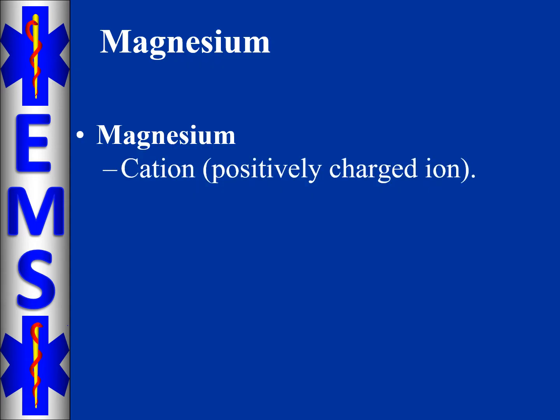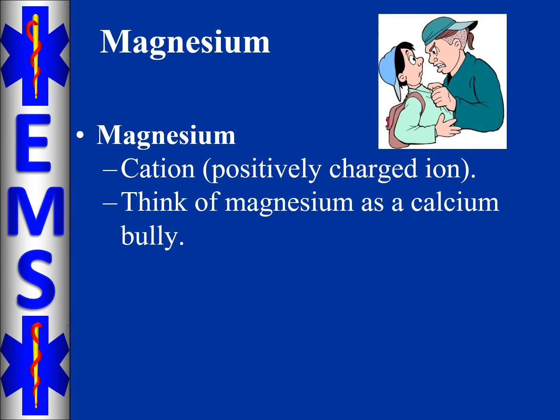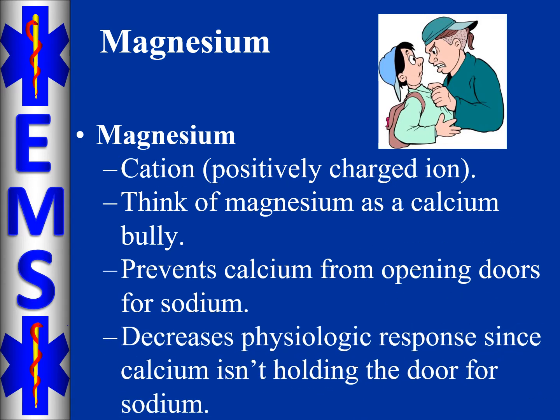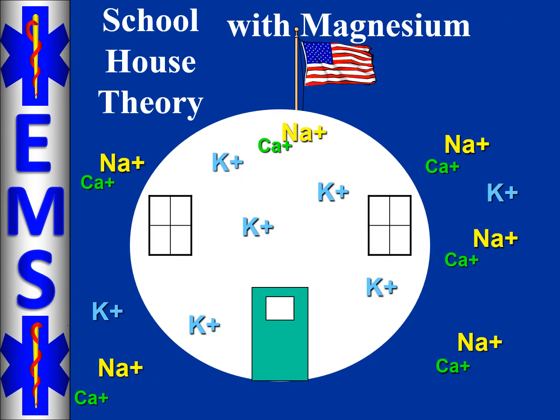Magnesium is another cation, which means it's a positively charged ion, and I want you to think of magnesium as a big bully. Magnesium particularly enjoys bullying calcium because they're young and vulnerable — it grabs onto calcium and prevents them from opening doors for sodium. As a reminder, sodium is a door snob and may not go through a door if it isn't held for them. This bullying results in less sodium moving into the schoolhouse. Since sodium is the facilitator of action and needs to move inside to initiate a physiologic response, magnesium will decrease this function by not allowing calcium to open doors for sodium.